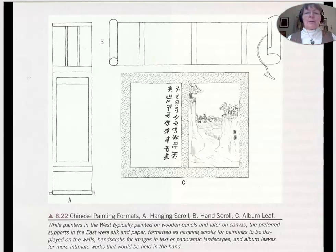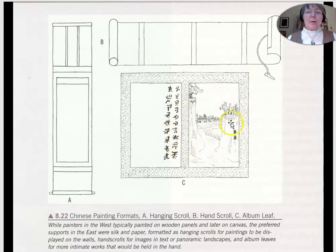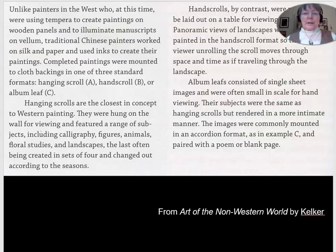The formats most commonly observed by us will be the hanging scroll, located over here; the hand scroll, here; and the album leaf — in this case, a double album leaf. I've included a summary borrowed from another textbook that explains the differences and reminds us of the different materials being used.